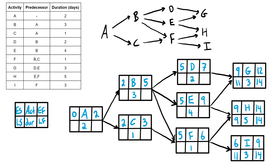Where there's only one successor, we bring that late start number straight across as the predecessor's late finish. So we bring eleven into activity D's late finish and subtract the duration of two, giving a late start of nine for D. For activity E, which has two successors, we take the smaller of the competing values — eleven or nine — and bring in nine. Nine minus four gives a late start of five for E. For activity F, which also has two successors, we take the smaller: nine or eleven — we bring nine. Nine minus one gives a late start of eight for F.